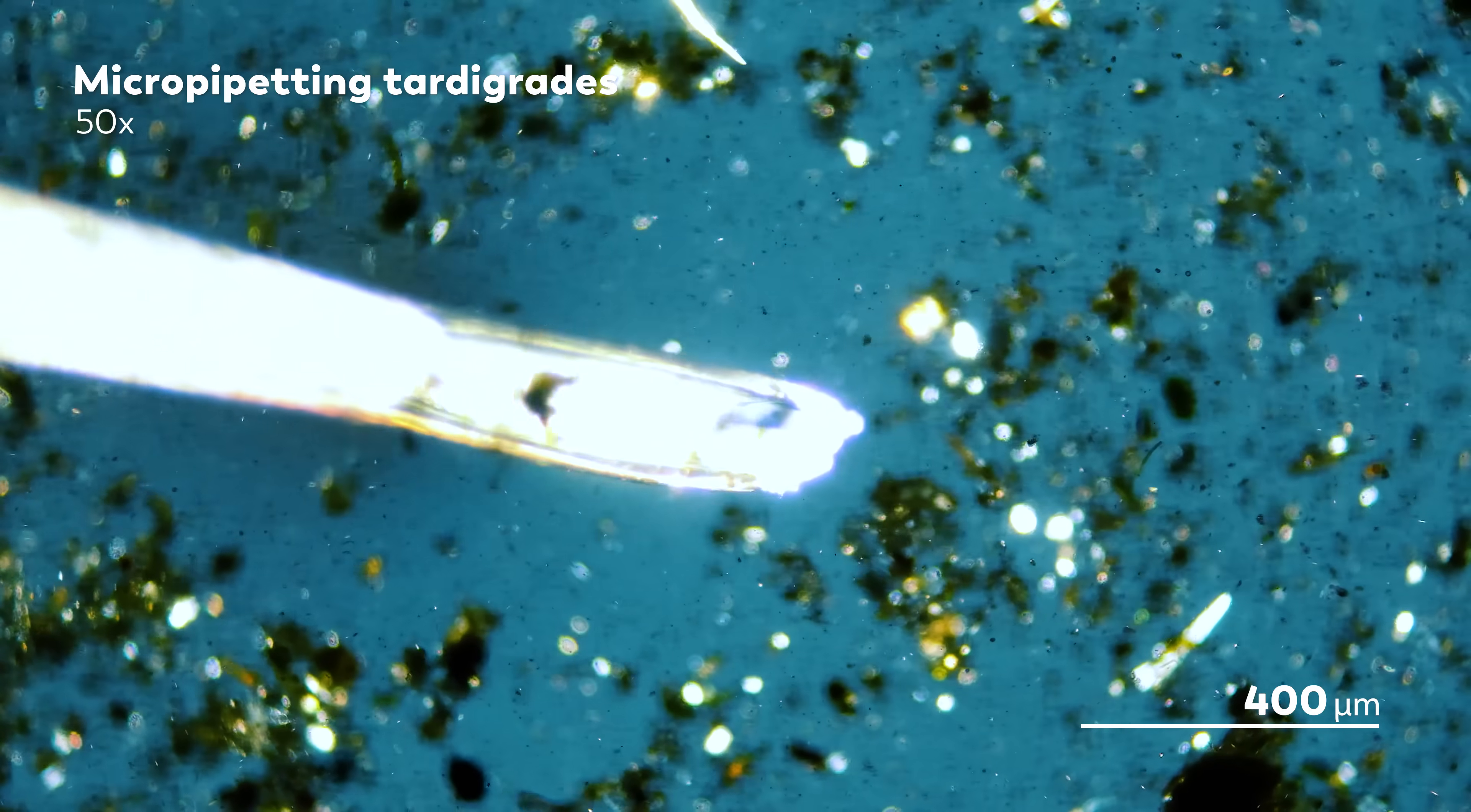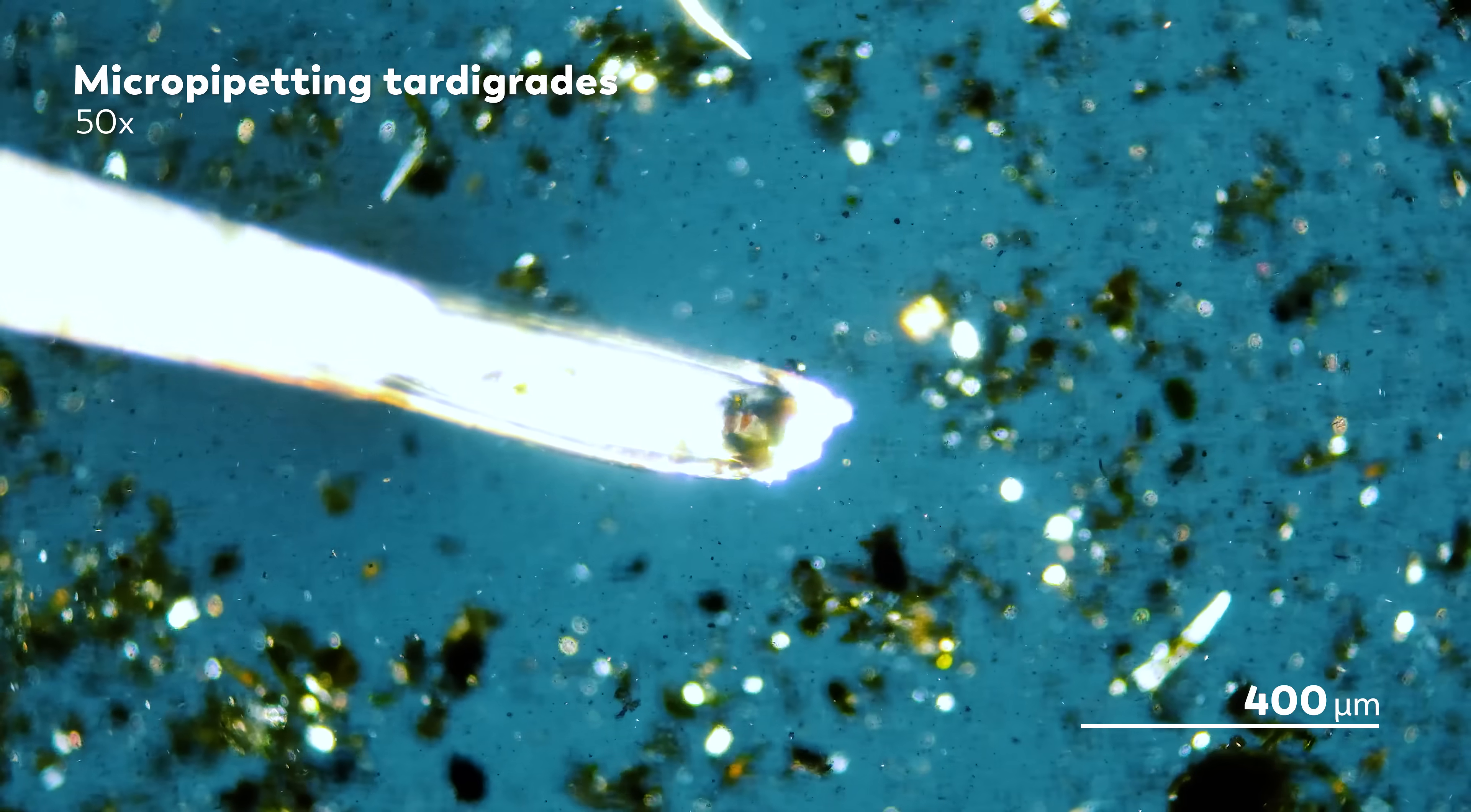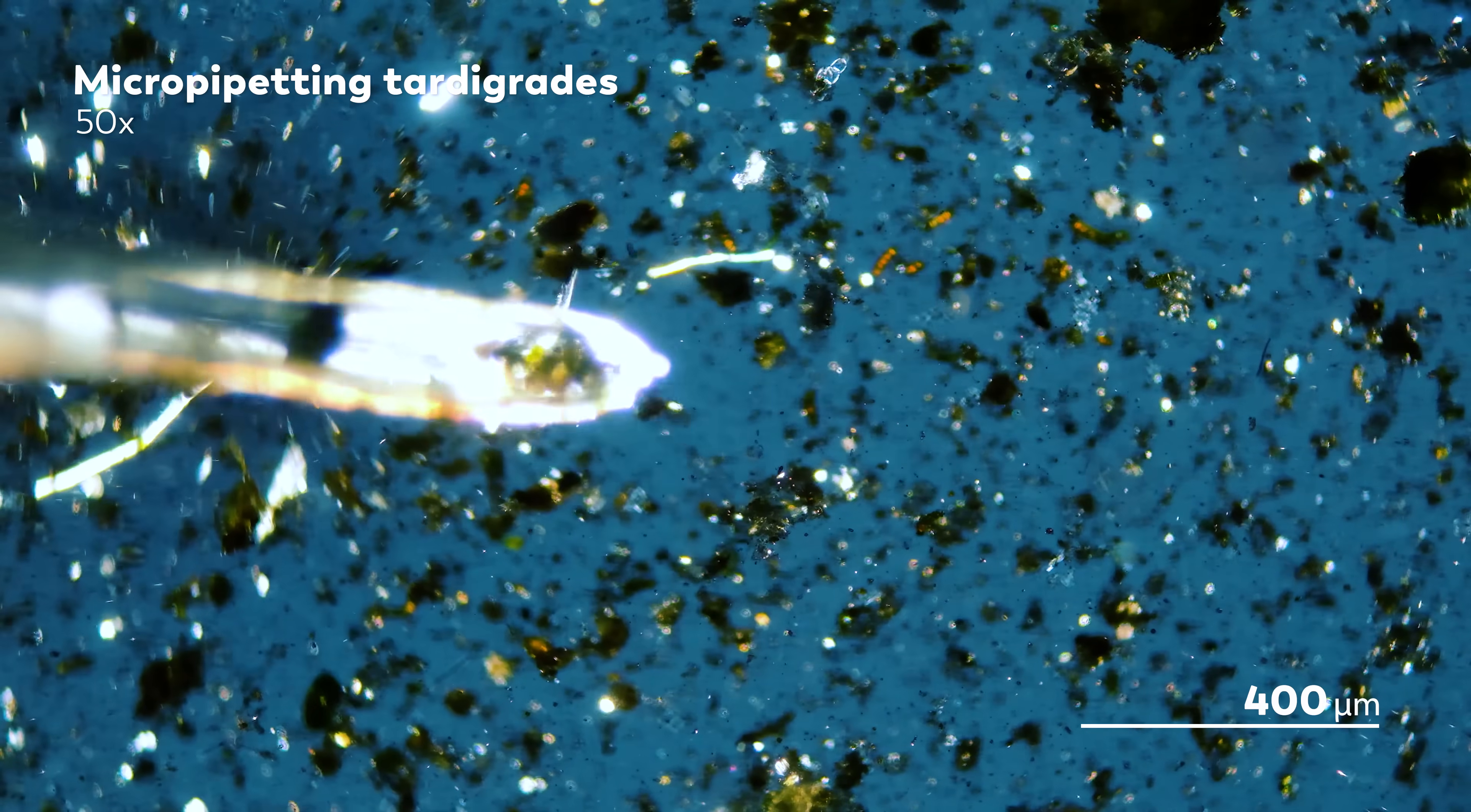To do micropipetting, you need a very thin tube. And traditionally, scientists use glass pipette tubes as the starting material for their micropipette. They heat the pipette over a Bunsen burner and slowly stretch the tip out so that it forms a thin, hollow tube. But for James, this became a problem, because it required a lot of glass tubes, and that became quite expensive.